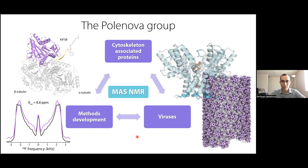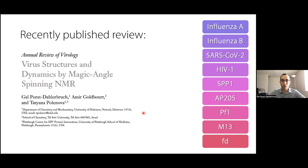Just a moment before I begin, I want to introduce myself and our group. I'm a graduate student in Tatiana Bolendova's lab, where we apply MAS and MR spectroscopy to study viruses, cytoskeleton proteins, cytoskeleton-associated proteins, and method development to study structure and dynamics. I'm specifically involved in MAS and MR methods development and studies of bacteria for HP22, but today I will not discuss this project. Instead, the reason I'm talking here today is because we recently published a review on virus structures and dynamics by magic angle spinning NMR in Annual Review of Virology.